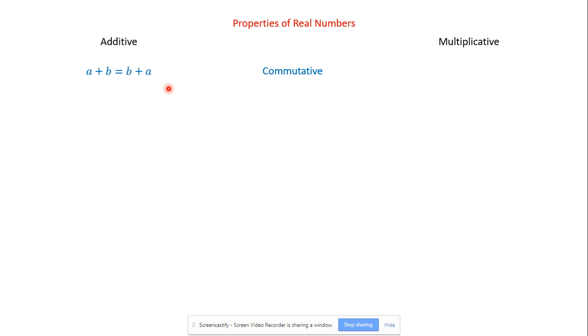Commutative, that's a commute. A commute is where you go from one place to another, so the numbers are able to move. Multiplicative, a times b equals b times a. So that's the commutative property.